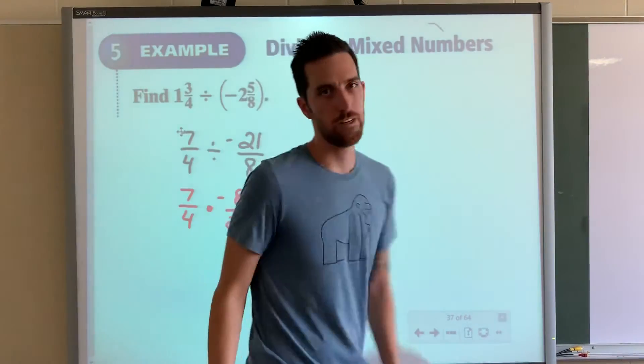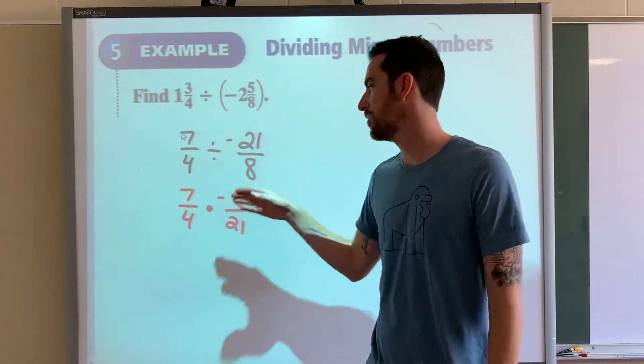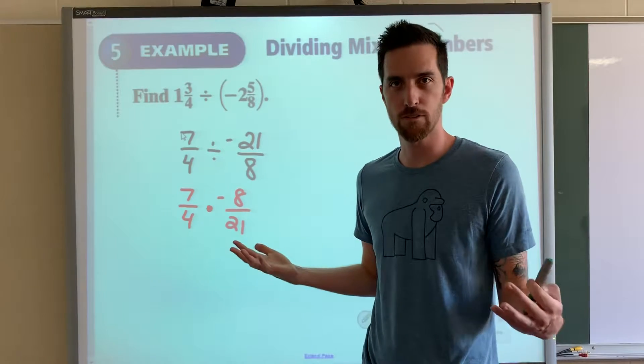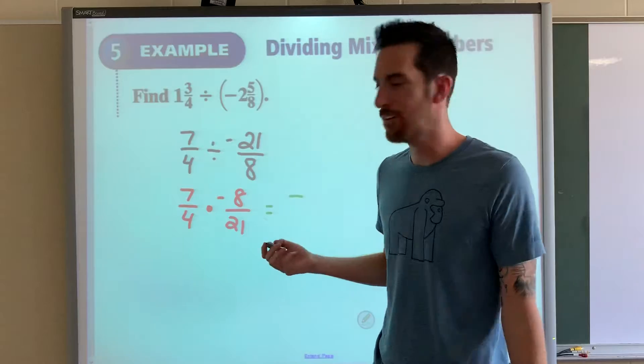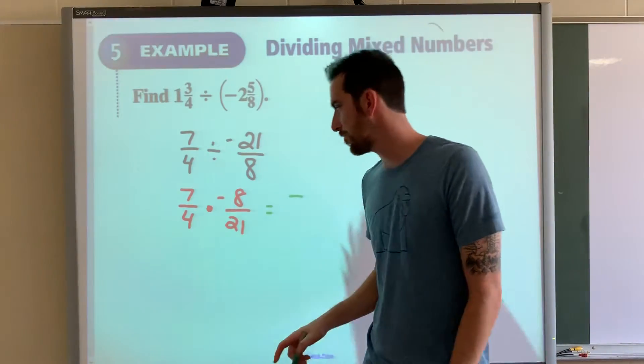Now our old rules. If you have a positive times a negative, what is the result going to be? It's going to be negative. So now we can ignore the negative sign, but let's see what we can simplify.